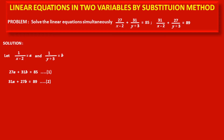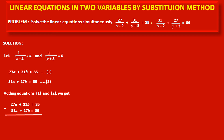Now, adding equations 1 and 2: (27a + 31b = 85) + (31a + 27b = 89). We get 27a + 31a = 58a, and 31b + 27b = 58b, equal to 85 + 89 = 174. Dividing both sides by 58, we get a + b = 174/58 = 3. Let us consider this as equation number 3.